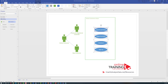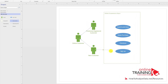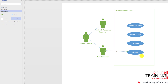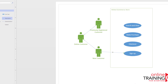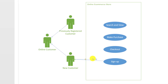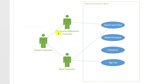Now let's define relationships between actors and use cases. To do that, we can use the association shape — bring in an association connected to one of the actors and then connect it to the use case shape. For example, a new customer needs to sign up before being able to use the system and do a checkout. At the same time, a new customer should be able to view items without signing up. Previously registered customers should be able to search and view items, and also make purchases.